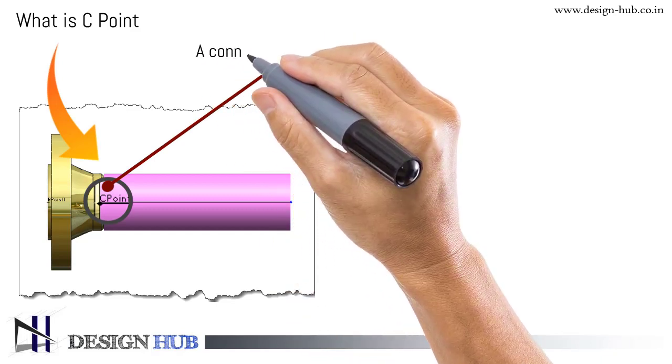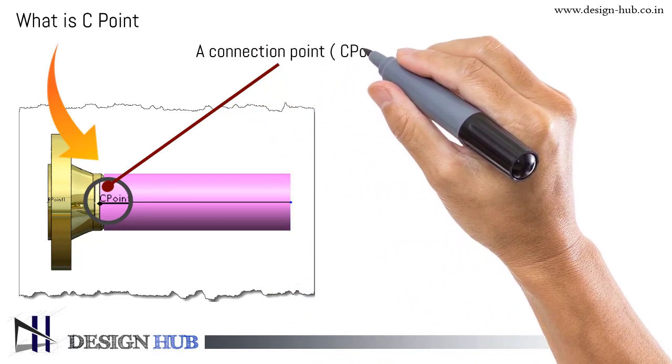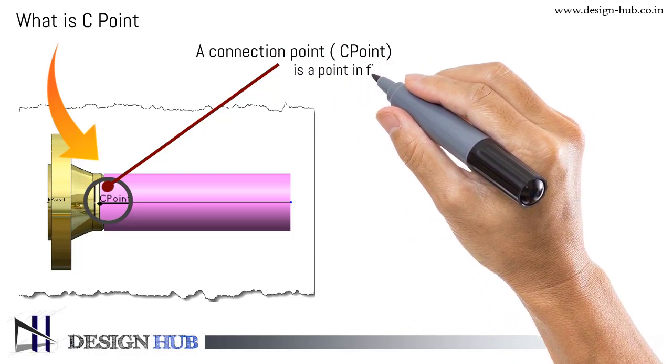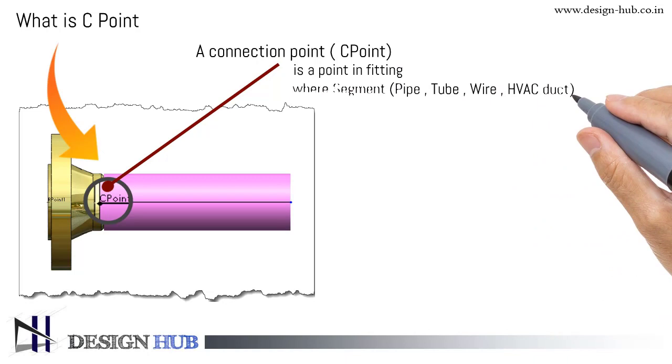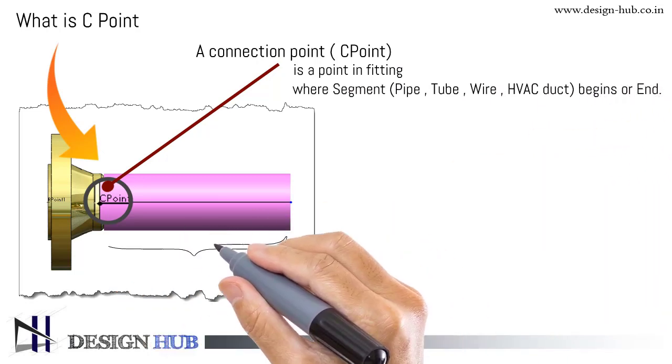C point is a point in fitting where a segment begins or ends. Segments can be pipe, tube, wire, or HVAC duct.